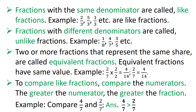How to compare fractions? To compare like fractions, compare the numerators. The greater the numerator, the greater the fraction. For example, compare 4 upon 7 and 2 upon 7 — here 4 upon 7 is greater than 2 upon 7. Are you all getting it, children?